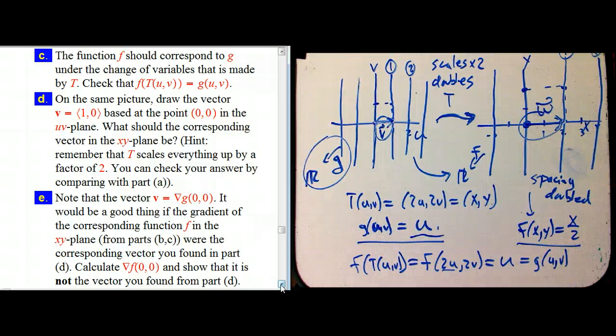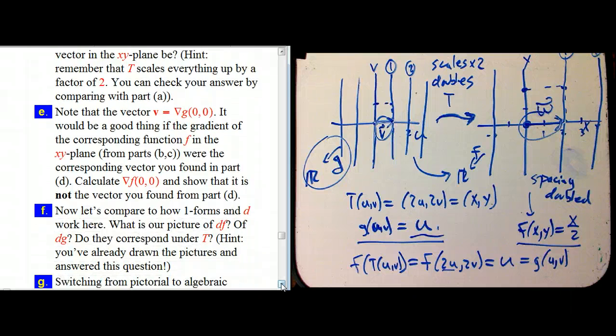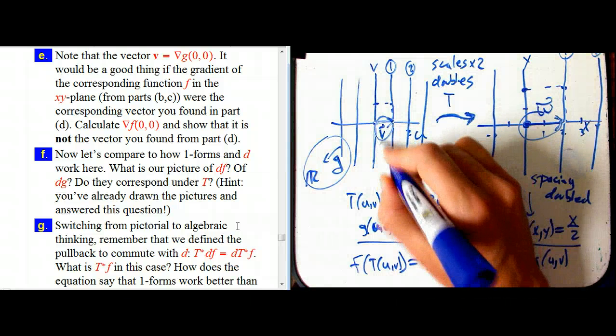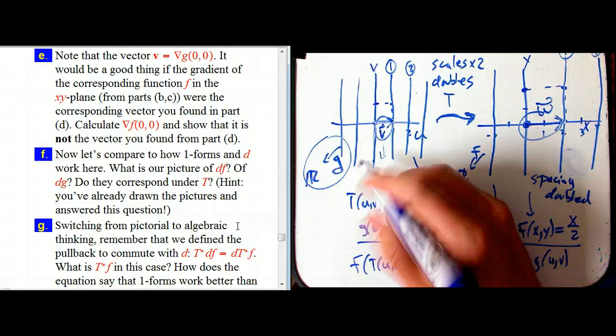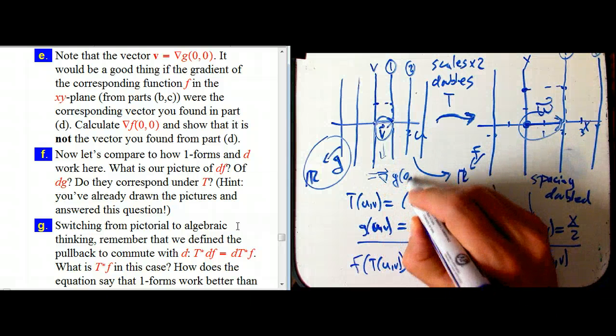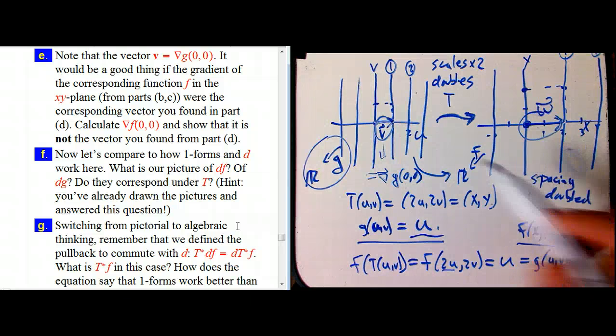But here's where the problem comes. So, excuse me. This vector v, that is equal to the gradient of our very simple function g evaluated at 0, 0.